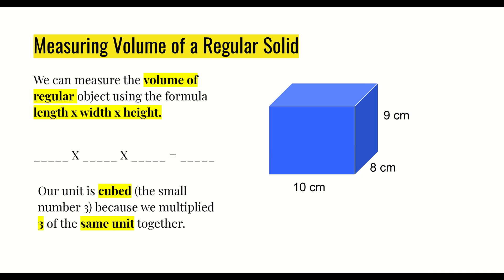Now we're looking at measuring the volume of a regular solid. Add a subheader in your notes for 'regular solids.' A regular solid is anything that is essentially a cube or rectangle — something with straight edges that can easily be measured with a straight edge like a metric ruler. Most objects in the world aren't regular solids, but when they are, we can find their volumes fairly easily, which is helpful for things like finding the volume of a room.